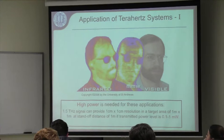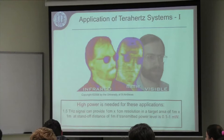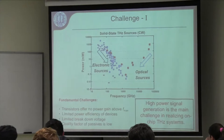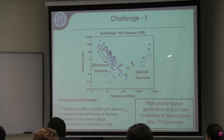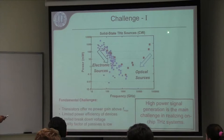To get good imaging you need high power sources: you send the signal to the object and look at transmission, which requires high power. The problem is this frequency band is too high for electronics and too low for optics. As shown in the graph of power versus frequency, as electronic sources approach terahertz the power drops dramatically, and optical sources lose power going to lower frequencies. So it's really hard to generate power at terahertz frequencies.